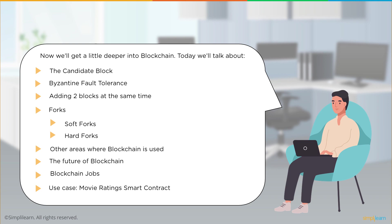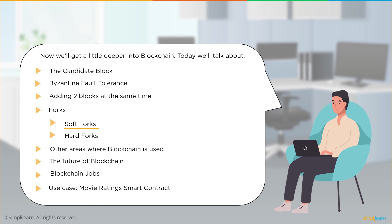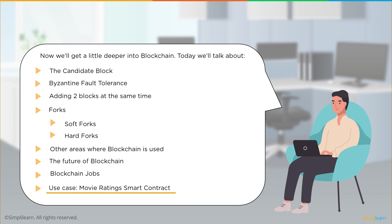Now we will get a little deeper into blockchain. Today we will talk about what a candidate block is, Byzantine fault tolerance as an earlier consensus mechanism, how blockchain handles adding two blocks at the same time, the concept of forking including soft forks and hard forks, other areas where blockchain is being used, the future of blockchain, upcoming blockchain jobs, and a quick demo on how to create and deploy a smart contract.